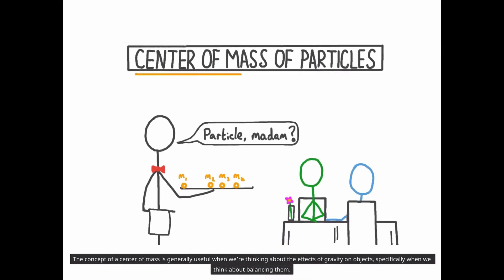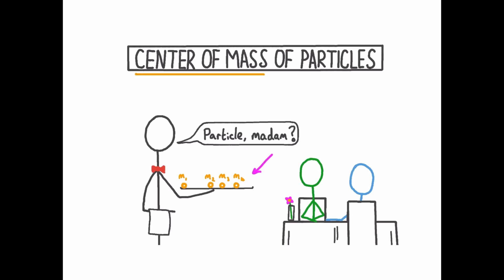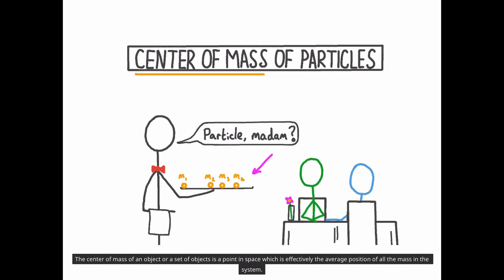The concept of a centre of mass is generally useful when we're thinking about the effects of gravity on objects, specifically when we think about balancing them. The centre of mass of an object, or a set of objects, is a point in space which is effectively the average position of all the mass in the system.